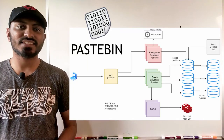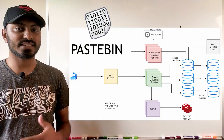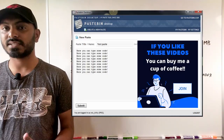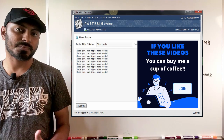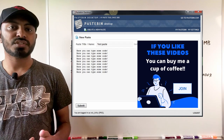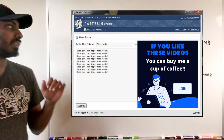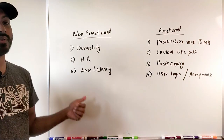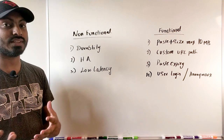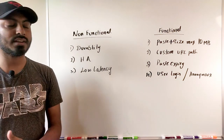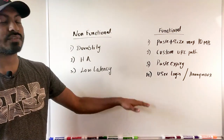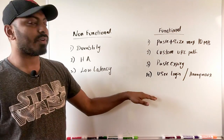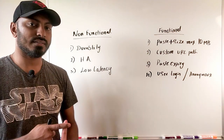Hello everyone, my name is Naren. In this session, let's understand system design or software architecture for pastebin or text sharing websites. First we need to understand the functional and non-functional requirements. Non-functional requirements refer to the behavior of your software architecture, and the functional requirements are the business requirements.